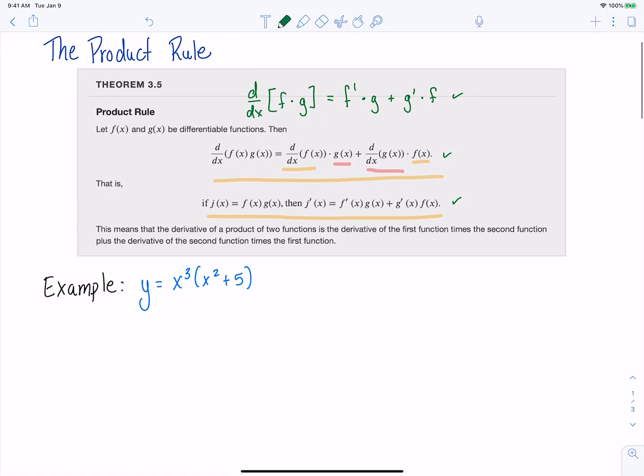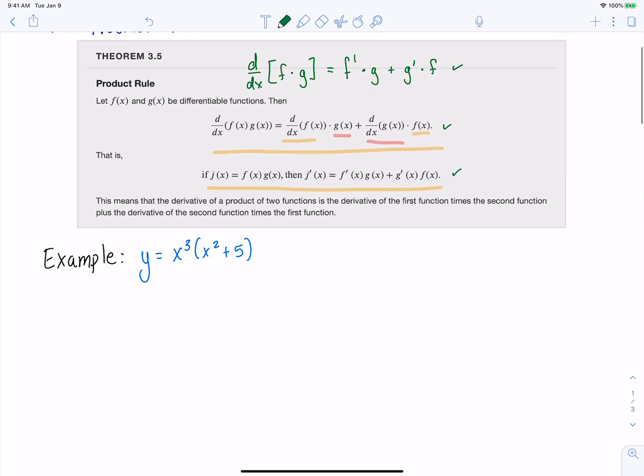So let's take a quick look at an example of why this actually works with a function that we can take the derivative of using rules we already have. So we already know we can use the power rule, right? We can take this function and use the distributive property to get it not written as x³ times (x² + 5), but we could distribute that x³ through and get x⁵ + 5x³, right?